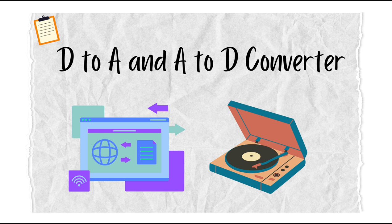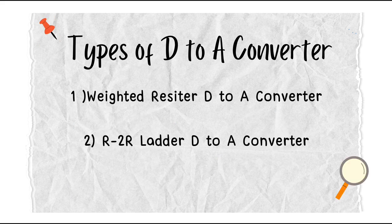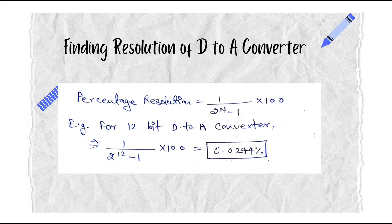For further discussion, we look at the D to A converter, which is basically of two types: the first one is the weighted D to A converter, and the second one is the R-2R ladder network converter.